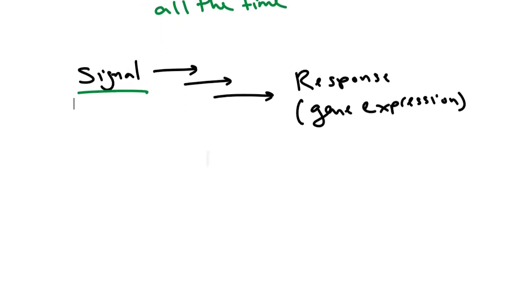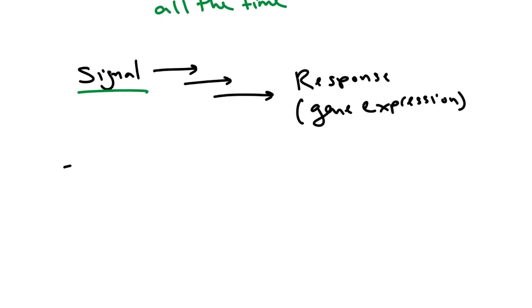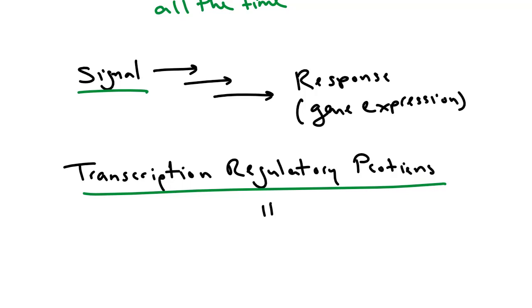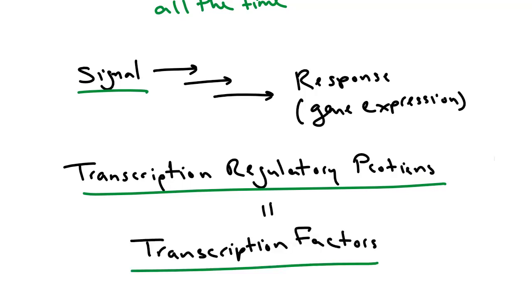These proteins involved in recruiting RNA polymerase to the promoter are called transcription regulatory proteins, also called transcription factors — these are equivalent terms. They can be abbreviated as TRPs or TF.